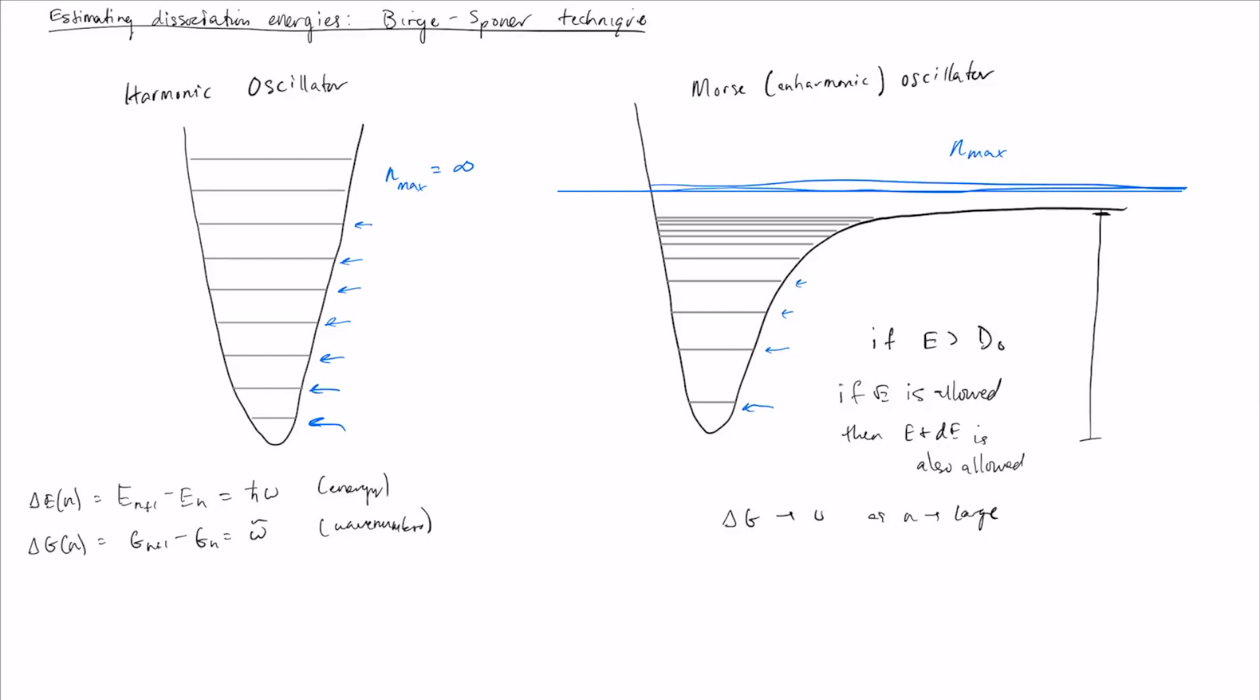The idea behind the Birge-Sponer plot is that we're going to use this fact and what we know about the Morse oscillator, or rather what we know about good approximations for anharmonic oscillators, in order to try and estimate both n_max, this maximum allowed quantum number, and also to determine the dissociation energy D₀.